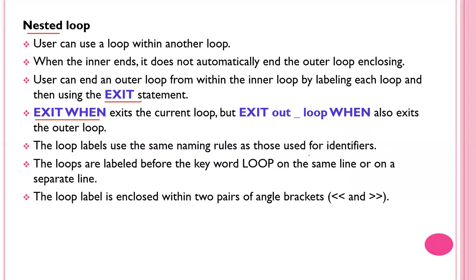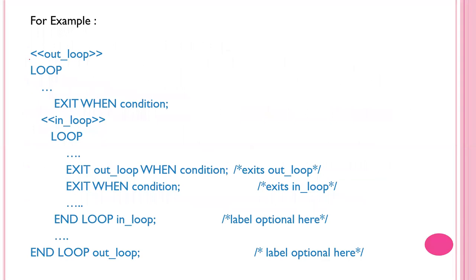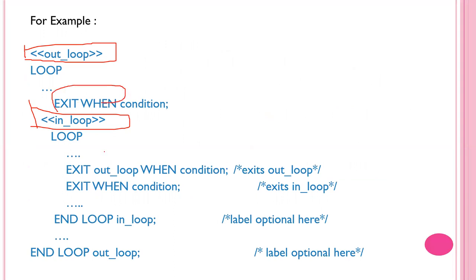Loop labels follow the same naming rules as identifiers. The loops are labeled before the keyword LOOP on the same line or on a separate line. The loop label is enclosed within two pairs of angle brackets. EXIT ends the current loop, while EXIT outer_loop_label exits the outer loop. This is what is called a nested loop.